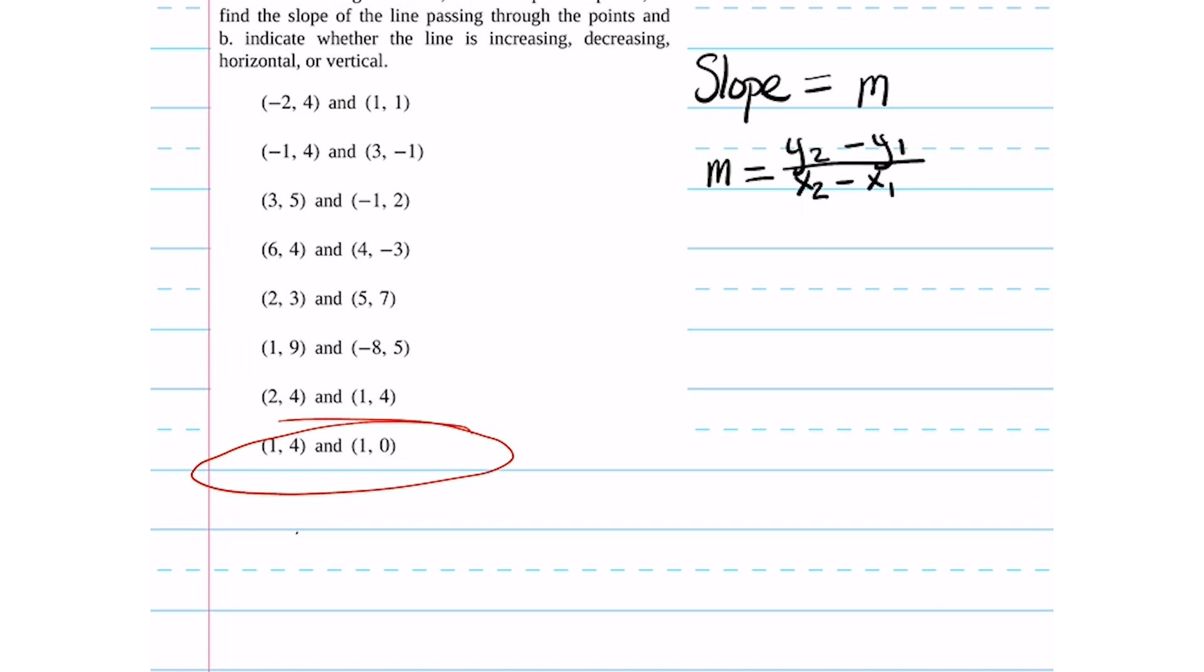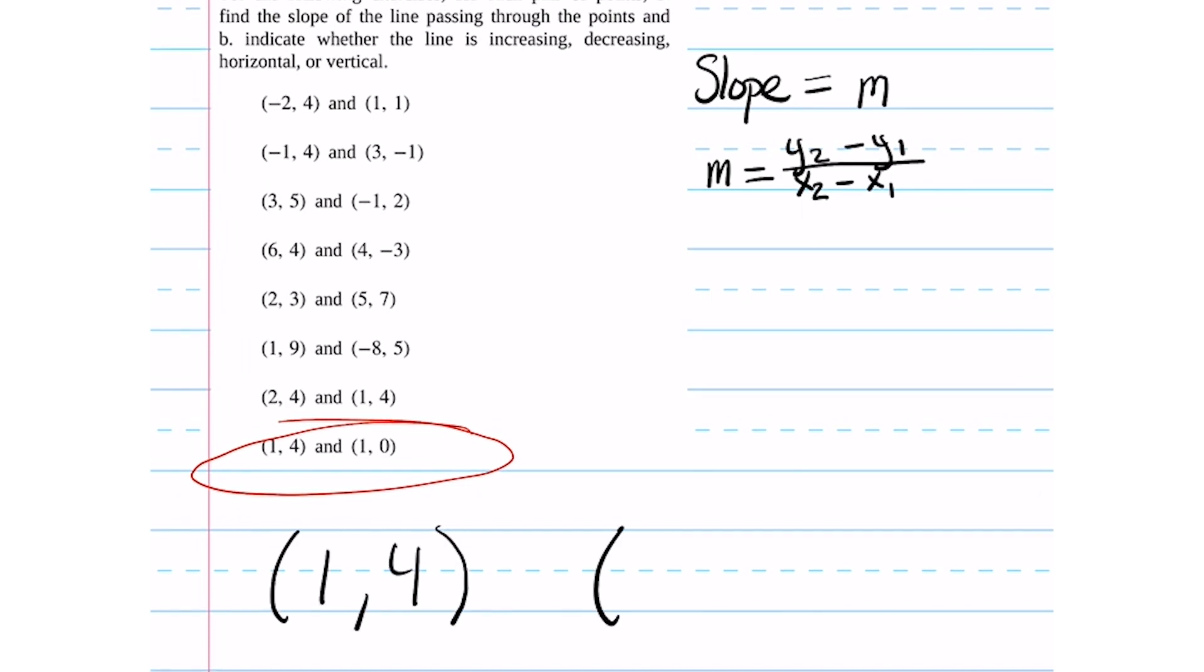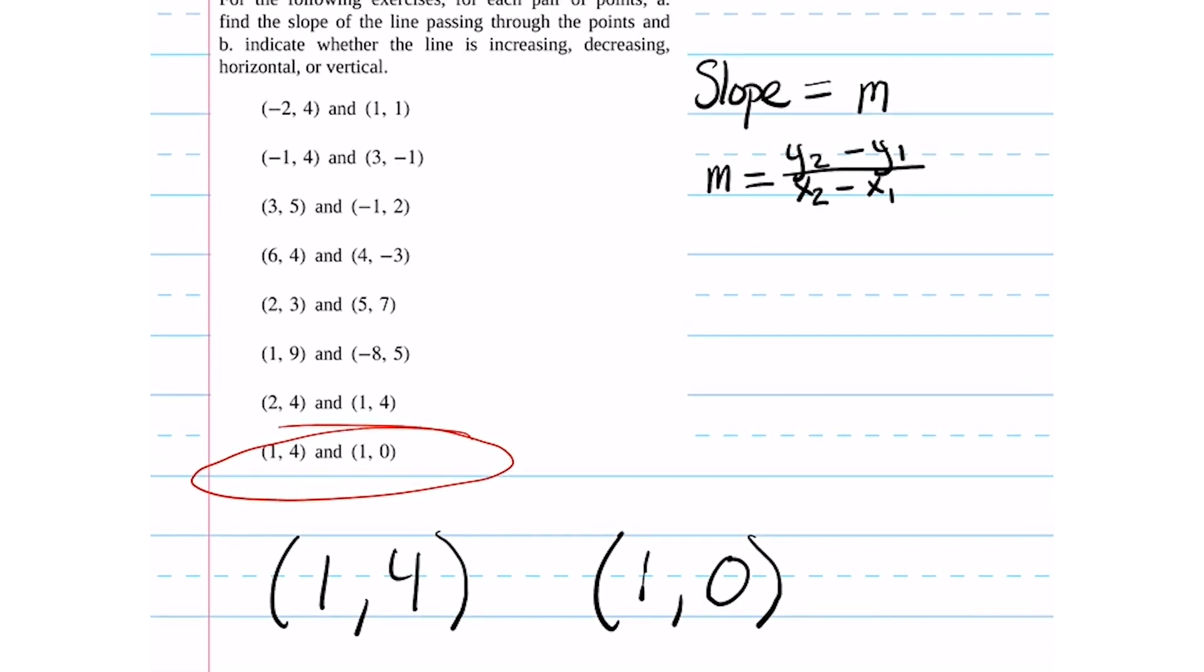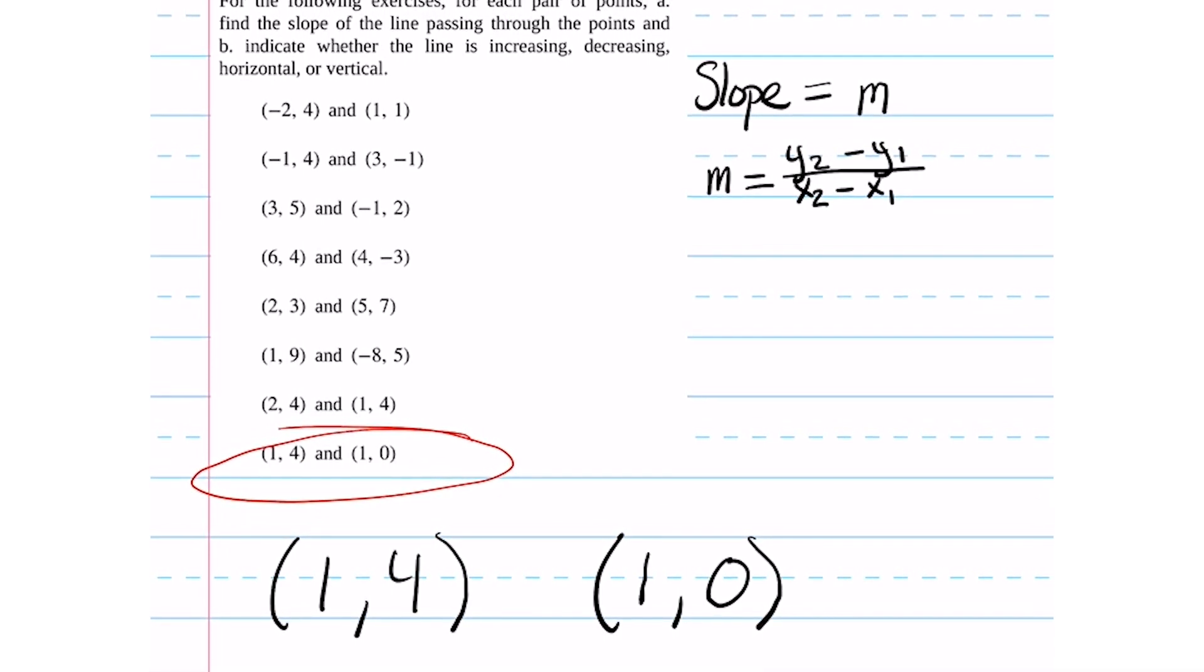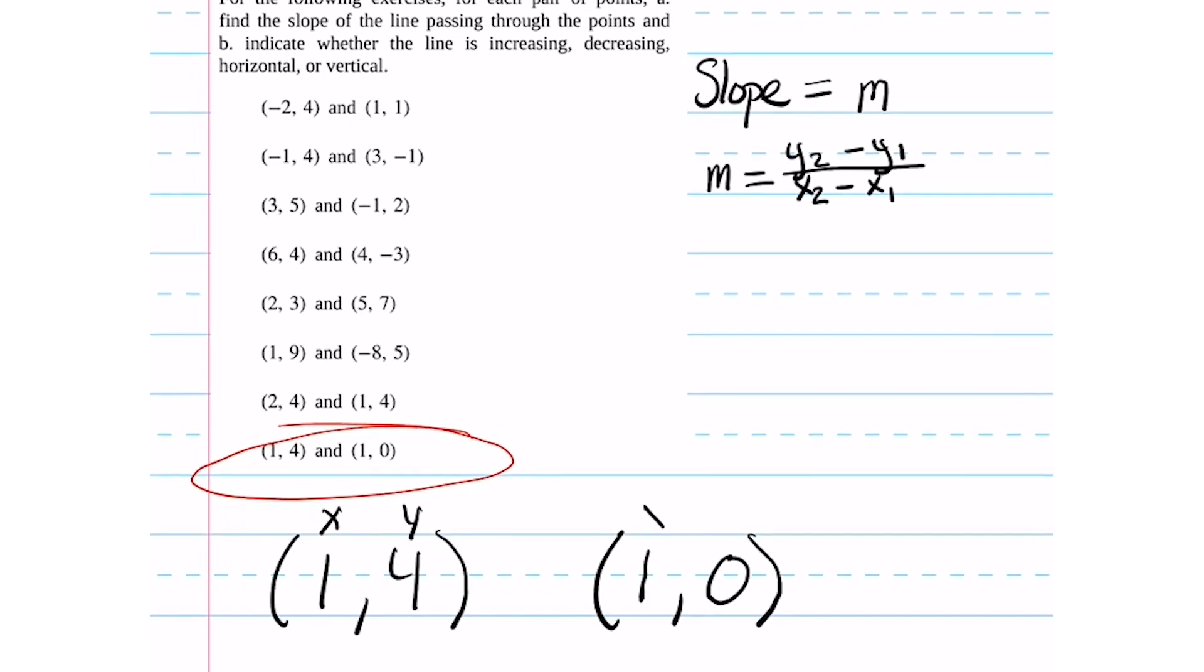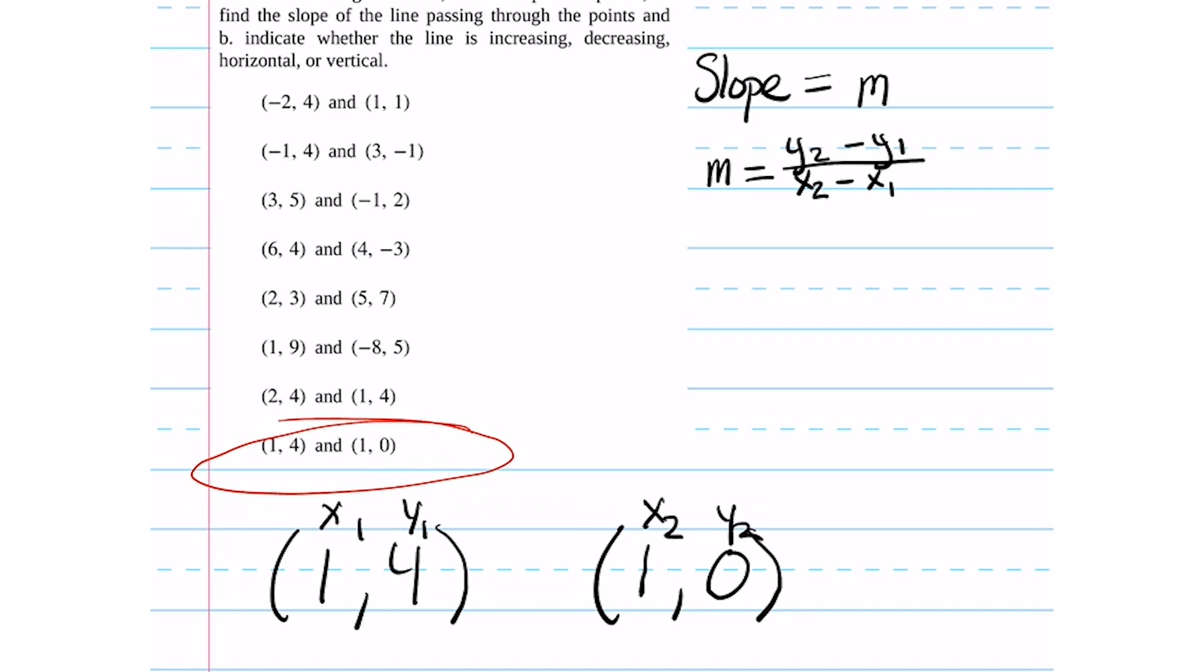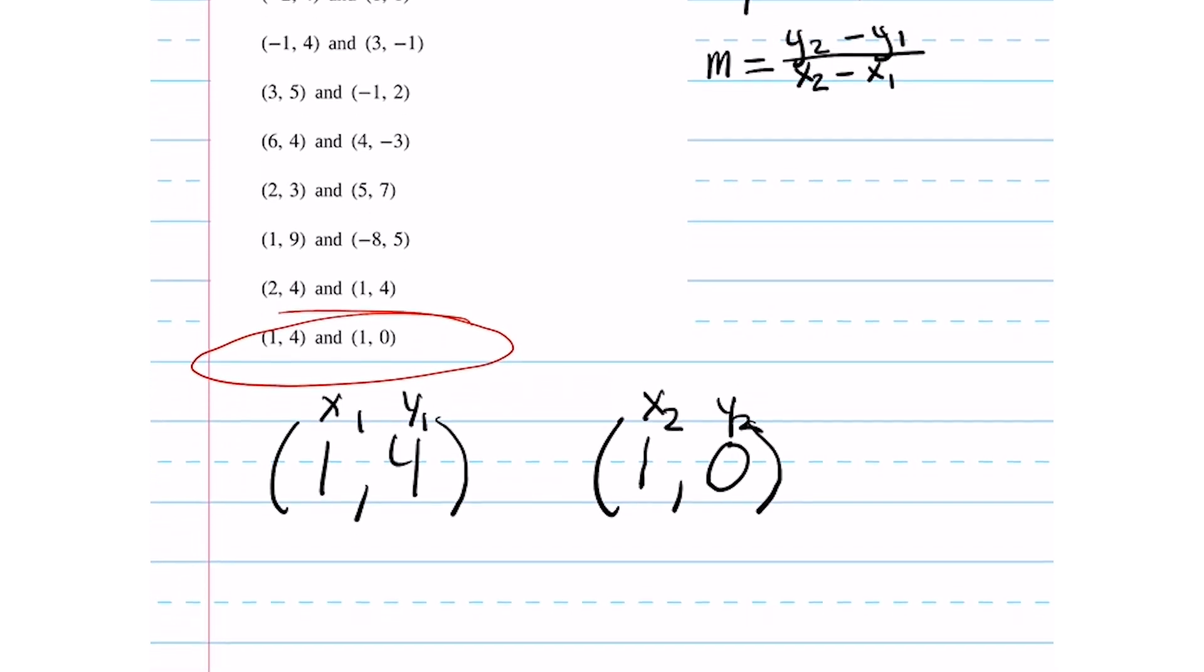So the next problem is difficult in the same way that the last problem was. You can write down your points as you normally would, 1, 4, and 1, 0. Label your x and y. And then from there, plug in each variable into the slope equation and evaluate.